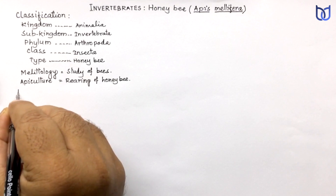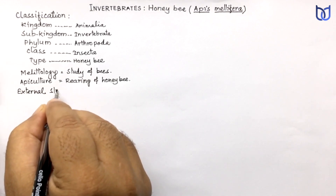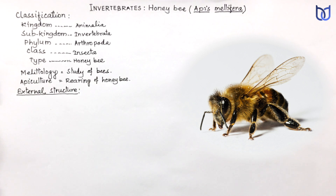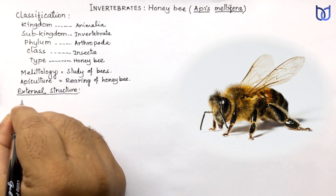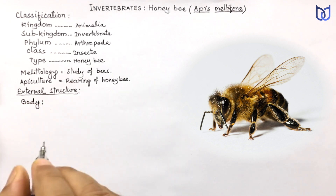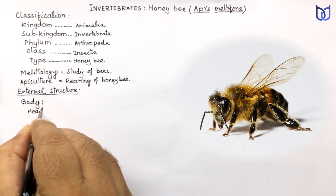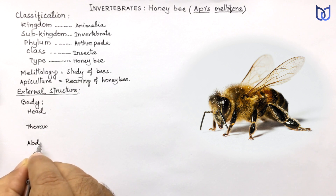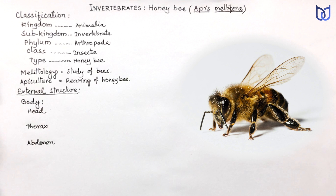Let us see the external structure of the honeybee. As discussed earlier, honeybees are flying insects. The body is elongated, cylindrical, and segmented. It consists of three distinct divisions: head, thorax, and abdomen. The head is small, hemispherical, and the anterior part.